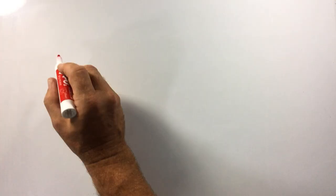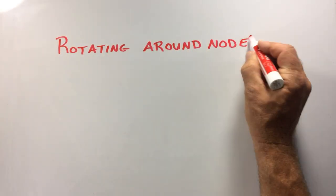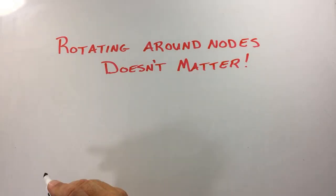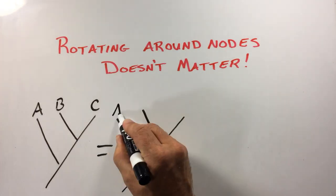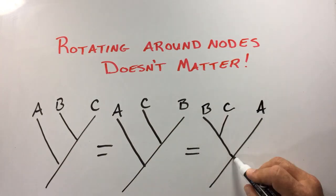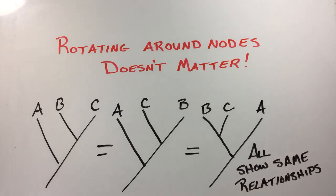Another important thing to know about phylogenetic trees is that you can rotate them around the nodes but that doesn't change the relationships shown in them. For example, in all three of the trees shown here, the relationships among species A, B, and C are the same. B and C are more closely related to one another than either is to species A because B and C share a more recent node with one another.